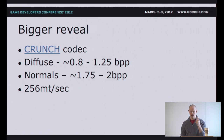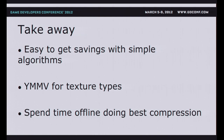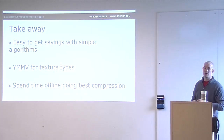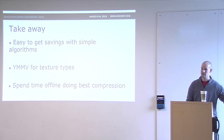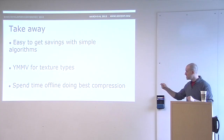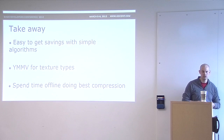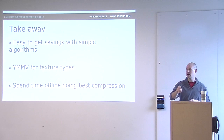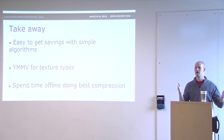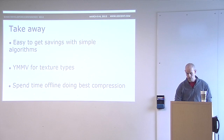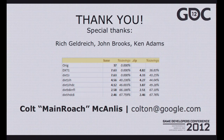Takeaways: it's actually easy to get really simple savings with simple algorithms if you concatenate them in the right way. Most importantly, your mileage may vary for texture types — what works for an ambient occlusion texture may not work for a diffuse texture, so optimize and combine techniques to find the best profile for each texture type. Do all your compression offline; you want all of your 16-millisecond frame time going towards runtime, not decompression. Big thanks to Rich Geldrich, John Brooks, and Ken Adams for their help. Feel free to contact me at colton@google.com. Thank you all very much.